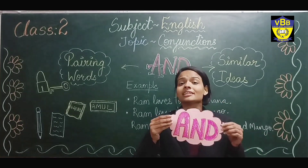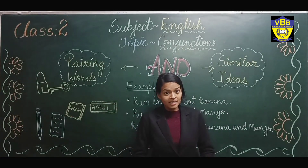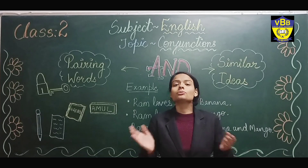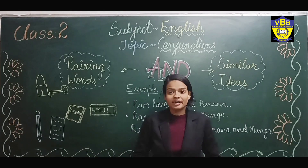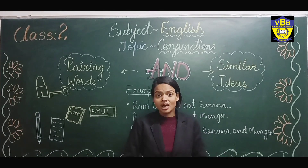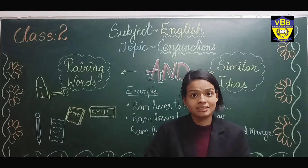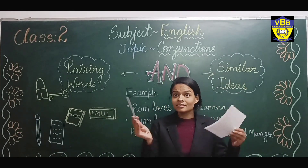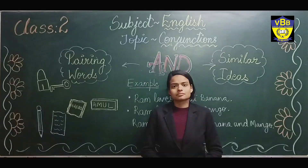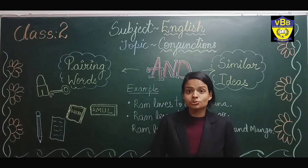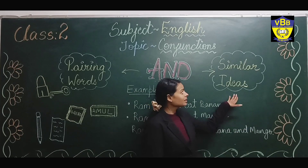Our first conjunction is 'and.' 'And' is also known as a pairing word. Why? Because it helps us to make pairs — like lock and key. Lock and key is used to close the door when you are out. Another example is pencil and paper, and in breakfast you love to eat bread and butter.